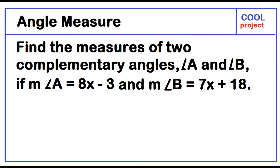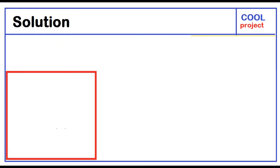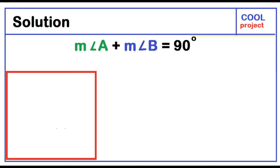Find the measures of two complementary angles, angle A and angle B, if the measure of angle A equals 8x minus 3, and the measure of angle B equals 7x plus 18. Solution: the measure of angle A plus the measure of angle B equals 90 degrees.